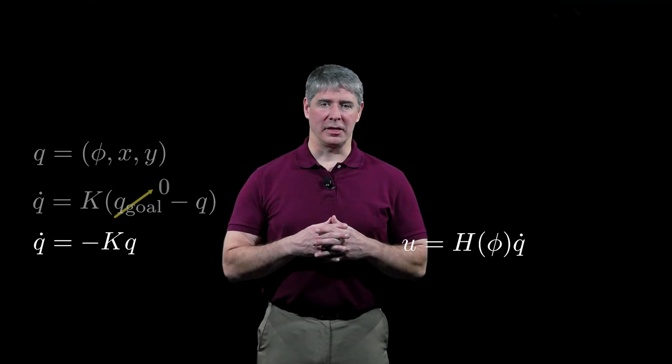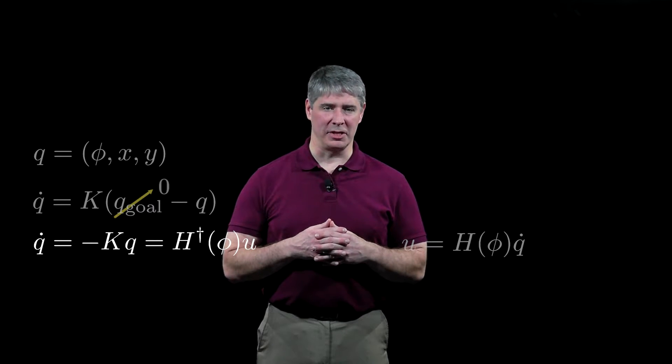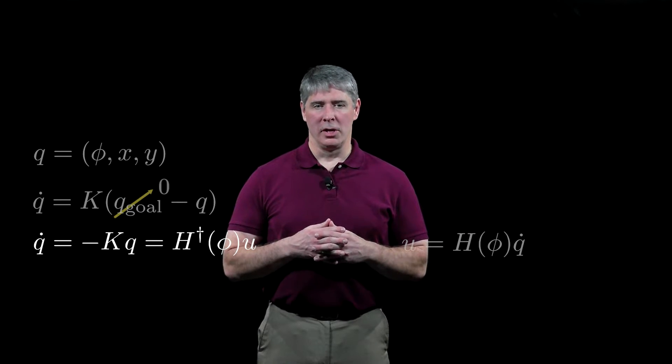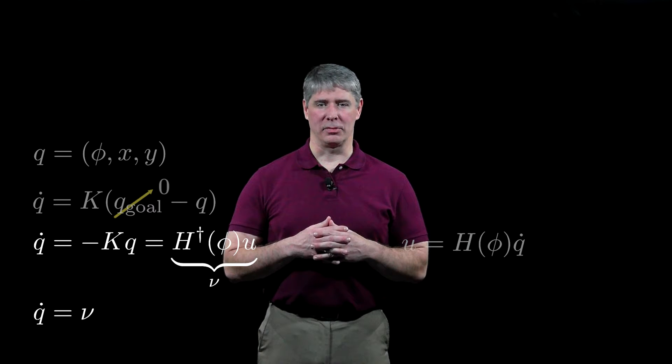Therefore, we can write the controller as Q dot equals minus K times Q equals the pseudo-inverse of H of phi times U, which we express more simply as Q dot equals nu.